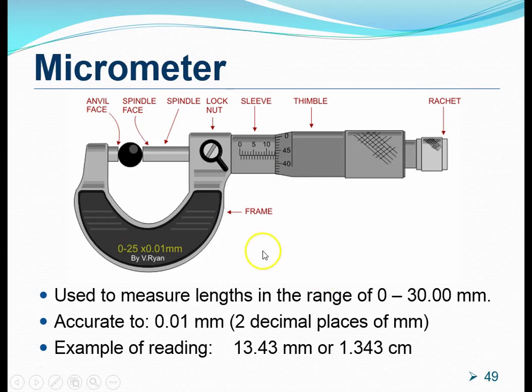Let's recall, a micrometer is best used to measure lengths in the range of 0 to 30 millimeters. Take note that a micrometer is specially designed to measure lengths in the unit millimeters, not centimeters. A micrometer is accurate to 0.01 millimeters. This simply means that the measurements we take are to be expressed in two decimal places of a millimeter.